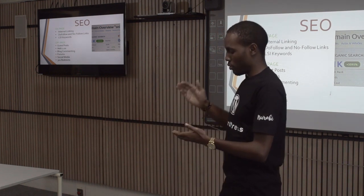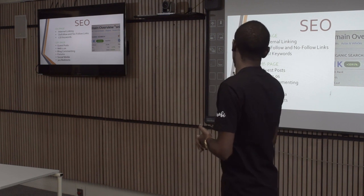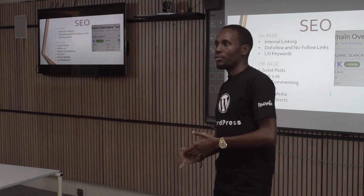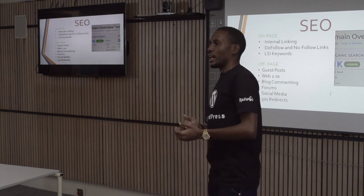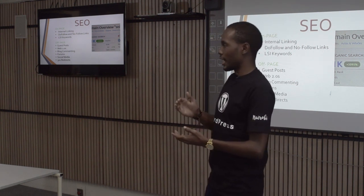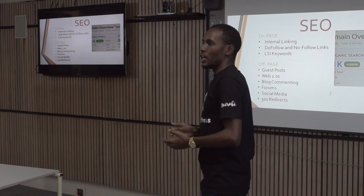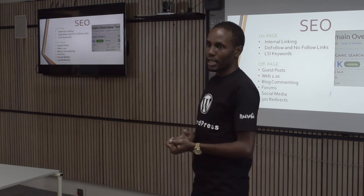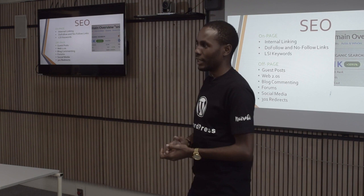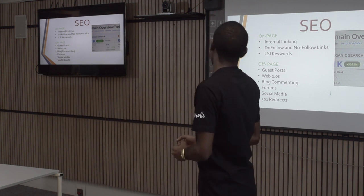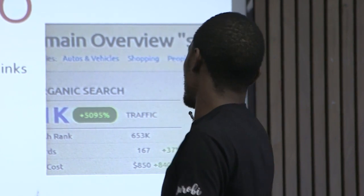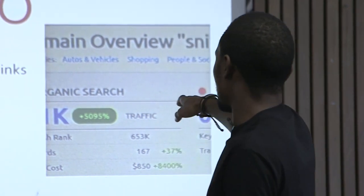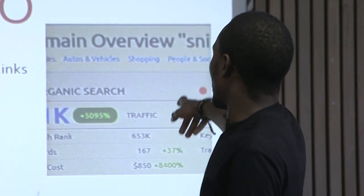You have to pass link juice from one page to another. You also need to ensure some links are do-follow and others are no-follow. Search engines use do-follow links when ranking pages but ignore no-follow links. Your affiliate links — those pointing to e-commerce sites like Amazon — must be set to no-follow. When I was starting out I wasn't aware of this. Once I corrected it, I was able to increase traffic on one of my sites by about 5,095%, as shown in the image from SEMrush.